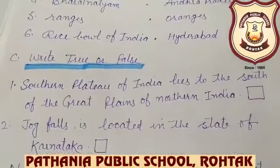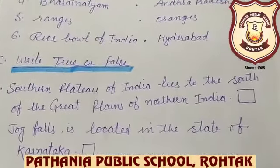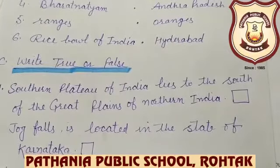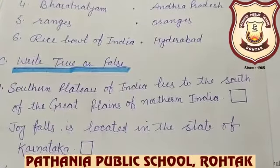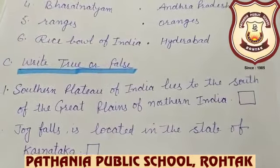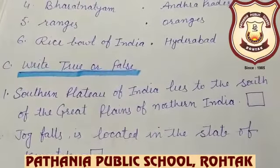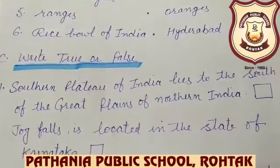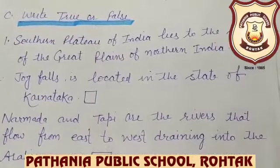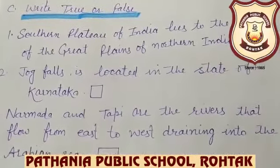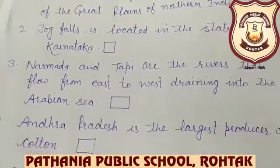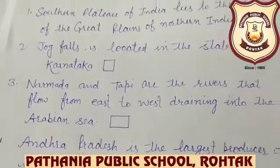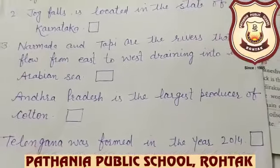Write true or false. Read these sentences carefully and write true or false accordingly: Southern Plateau of India lies to the south of the great plains of northern India. Jog Falls is located in the state of Karnataka. Narmada and Tapti are the rivers that flow from east to west, draining into the Arabian Sea. Andhra Pradesh is the highest producer of cotton. Telangana was formed in the year 2014.